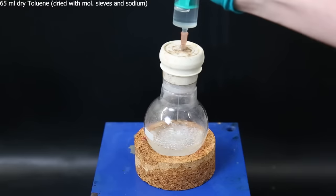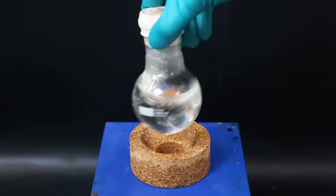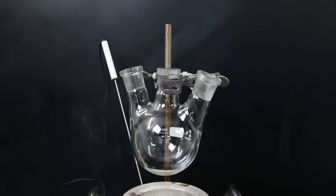Now to the flask containing the bulk of the tin 4 chloride, I inject 65 ml of dry toluene and then mix it around. I put it on the side and can now start the next step.